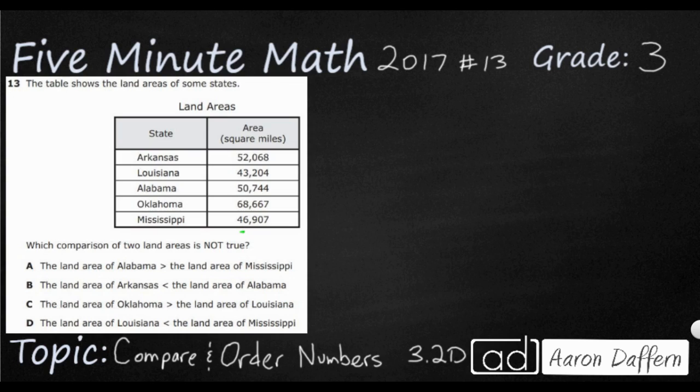And you notice that each of these answers has either a greater than or a less than symbol. But we need to watch before we start working this out. Look at how the question is asked. Which comparison of two land areas is not true? Which means three of these are going to be true. We need to find the one that is not true. So that's going to be the little trick that we're working on here.